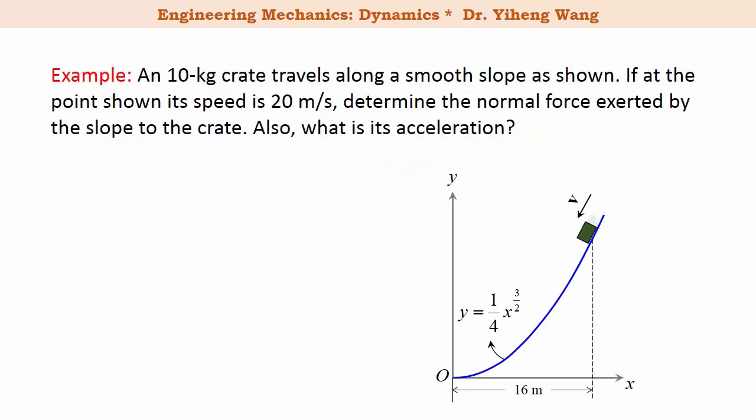Let's look at this example. There's a 10 kilogram crate traveling down along this smooth slope — smooth indicates that we don't have to consider friction. If at the point shown it has a speed of 20 meters per second, we need to determine the normal force exerted by the slope on the crate, as well as its acceleration at this point. We're going to use normal and tangential components to solve this problem, so we first need to set up our coordinate system.